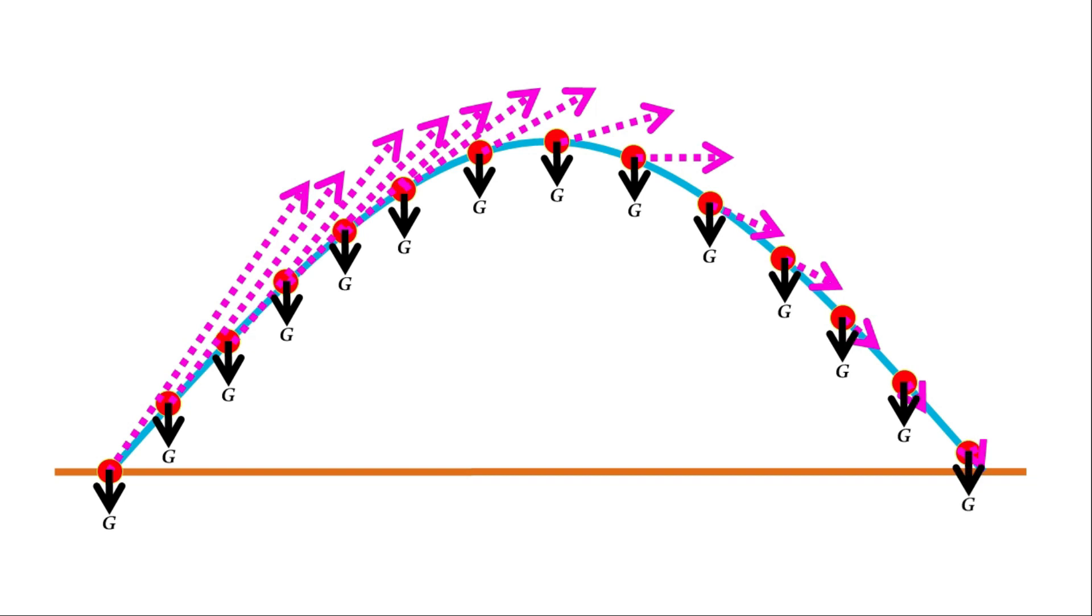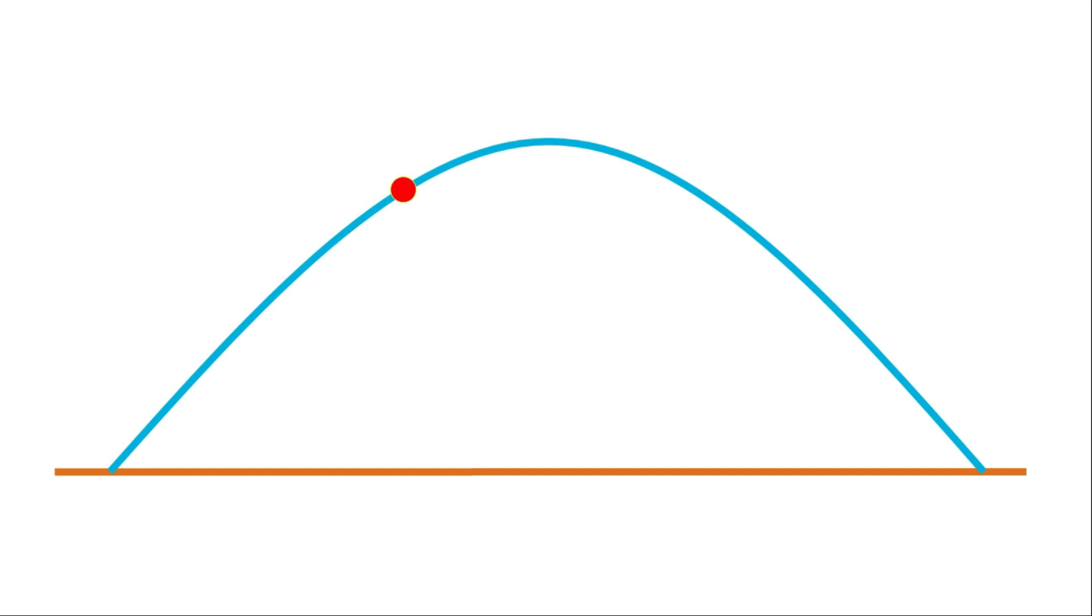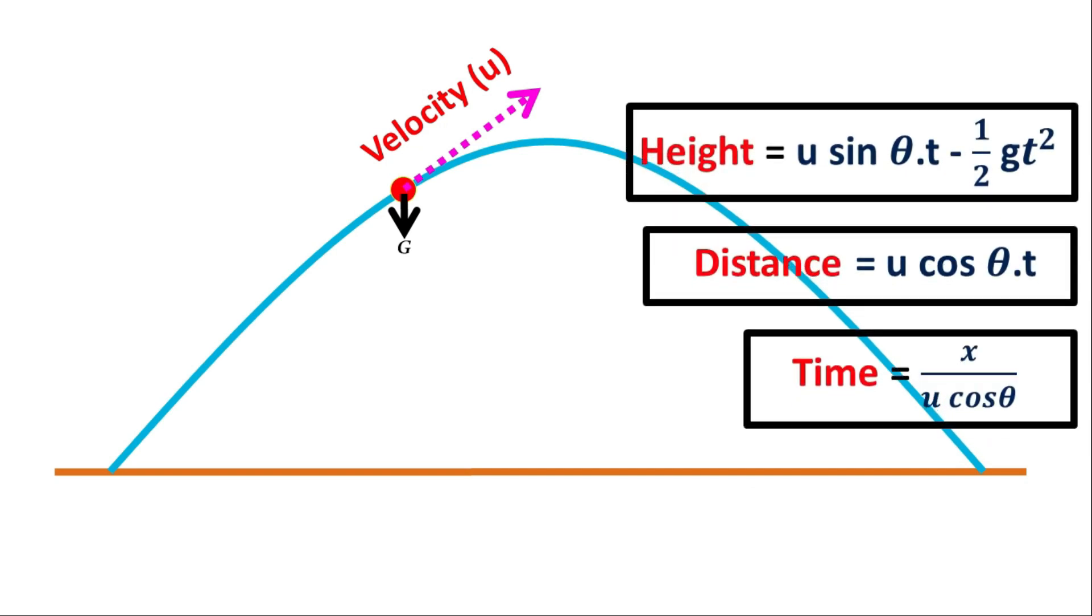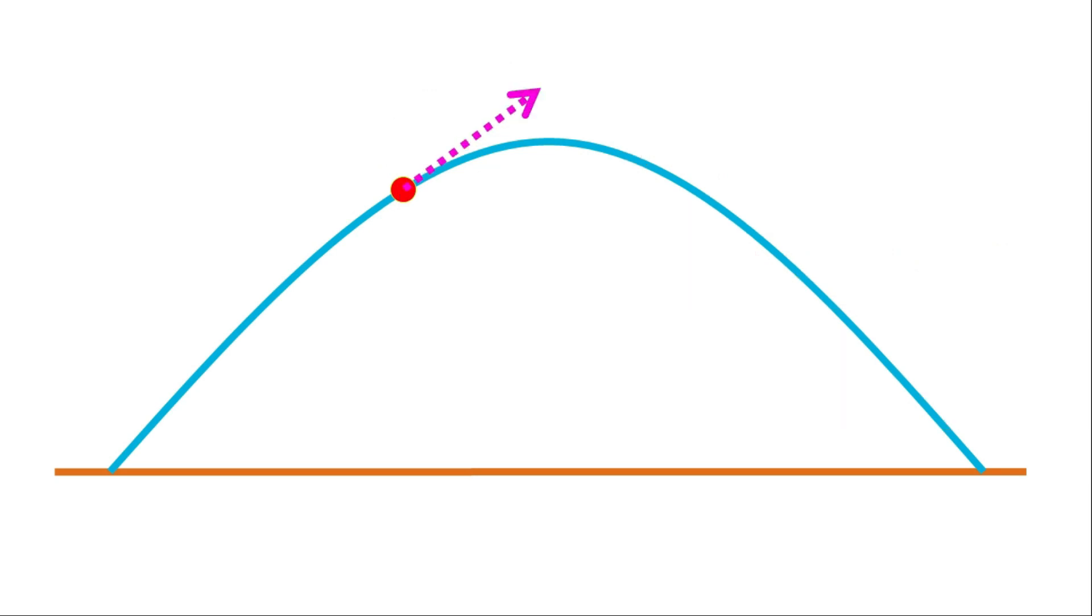So now in the parabolic motion, at this point gravitational force is working, but where is the other force? Because now thrower is not here, but the object is having velocity in this direction. On the basis of velocity we calculate height and distance and time using these formulas. So velocity is working in this direction and gravity is working in this direction. But this is velocity vector and this is gravity, and gravity is force vector. And we cannot add two different quantity vectors.